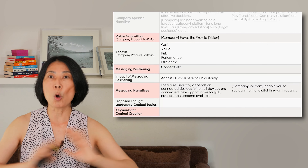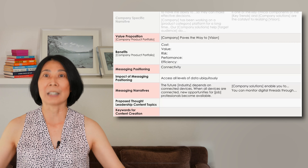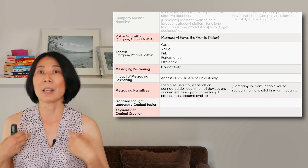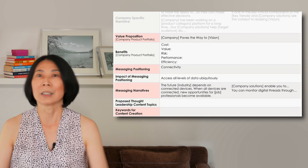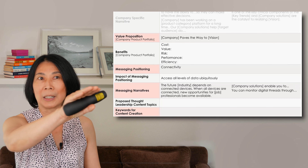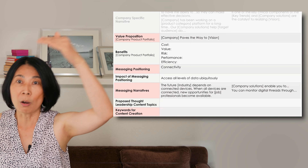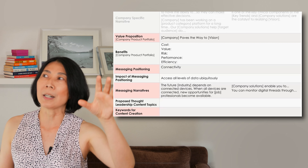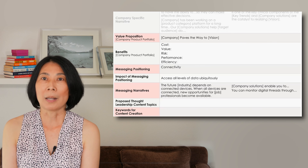For the quality management suite, one key differentiator is connectivity — their system can connect all devices, from desktop to phone to tablets to IoT. I work with them to think through the impact of that positioning. When you connect everywhere, you can access all levels of data anywhere, anytime. Then you start building the narrative: this ability to connect all devices together will help the industry in the future — doing what? Do you see how everything is connected in terms of writing a story? This is essentially an outline of your thought leadership narrative.